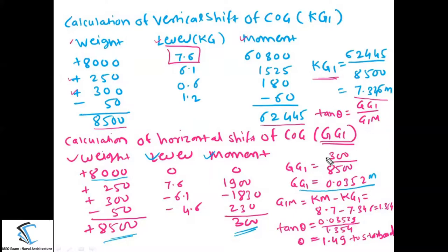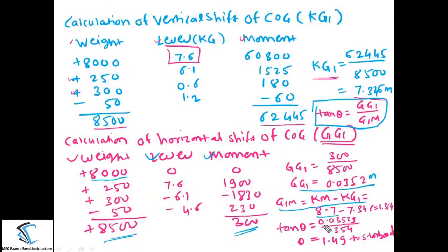To find the angle of list: tan θ = GG1 / G1M, where G1M is the final metacentric height. G1M = KM − KG1 = 8.7 − 7.346 = 1.354 meters. Substituting GG1 = 0.0352 and G1M = 1.354, you get theta = 1.49 degrees toward starboard.